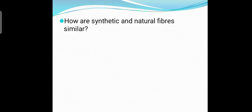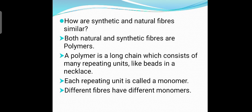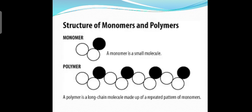How are synthetic and natural fibers similar? Both natural and synthetic fibers are polymers. A polymer is a long chain of molecules which consists of many repeating units, like beads in a necklace. Each repeating unit is called a monomer. When the monomer repeats itself, a long chain structure is formed which is called a polymer. Different fibers have different monomer units, but both are long chain molecules of monomers. In this picture you can see how monomers repeat themselves and form polymers.